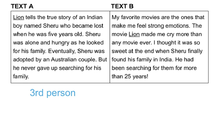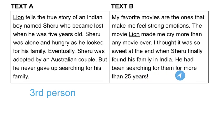Text B, on the other hand, has a different point of view. I notice by its use of the words my, me, and I that it's written in the first person. It tells how the narrator feels and what he thinks about the movie Lion.